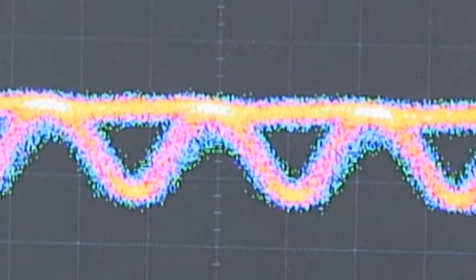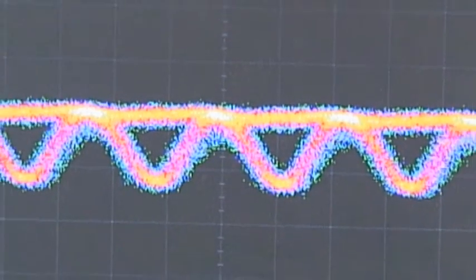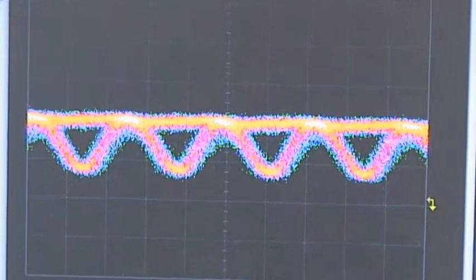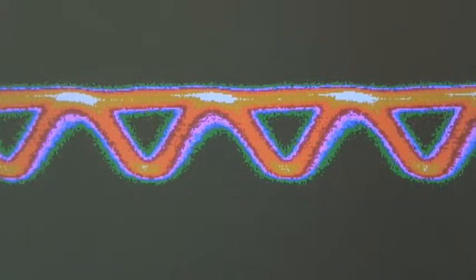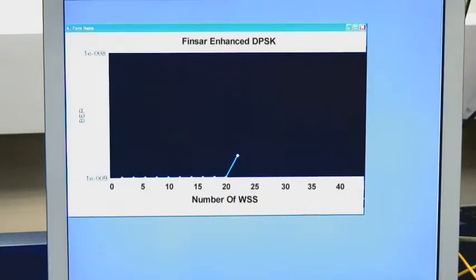Let's look at the performance of a single 40 Gb E-DPSK signal transmitted multiple times around the loop and propagated through multiple wavelength selective switches and fiber spans. As we increase the number of times the signal passes around the loop and increase the fiber length and number of passes through the WSS, we can show that the bit error rate approach the FEC limit of 10 to the minus 3 after 1600 km and 40 cascaded WSSs.